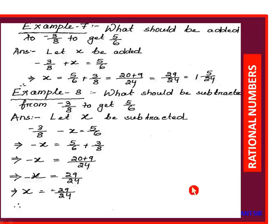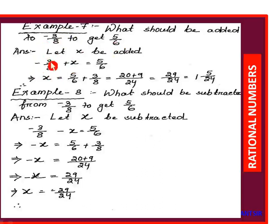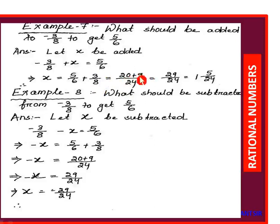Example 7: what should be added to -3/8 to get 5/6? Let x be added to -3/8 to get 5/6. Then -3/8 + x = 5/6, so x = 5/6 + 3/8. LCM of 6 and 8 is 24; 4 into 5 equals 20, plus 3 into 3 equals 9. So x = 29/24, which converts to the mixed fraction 1 whole 5/24.